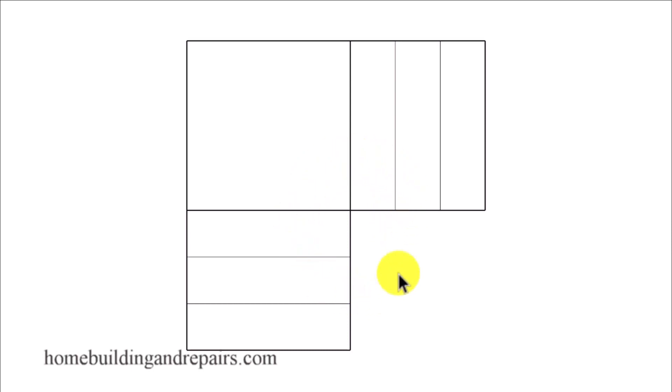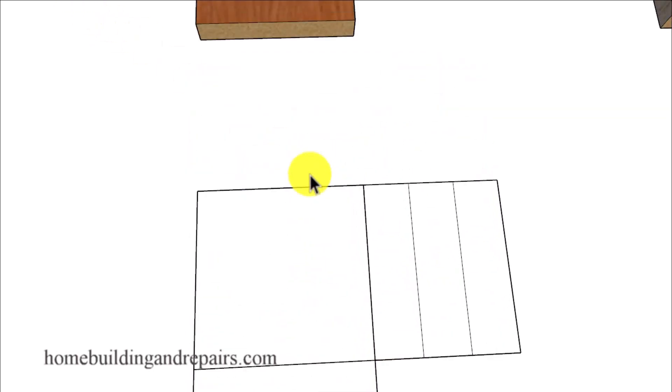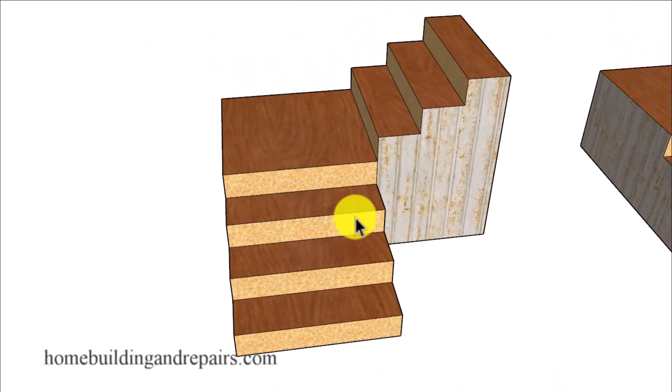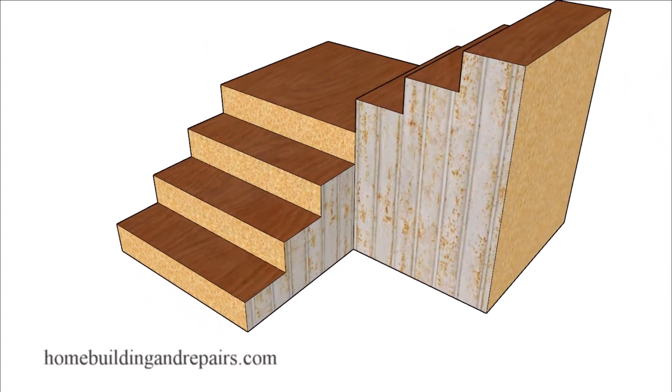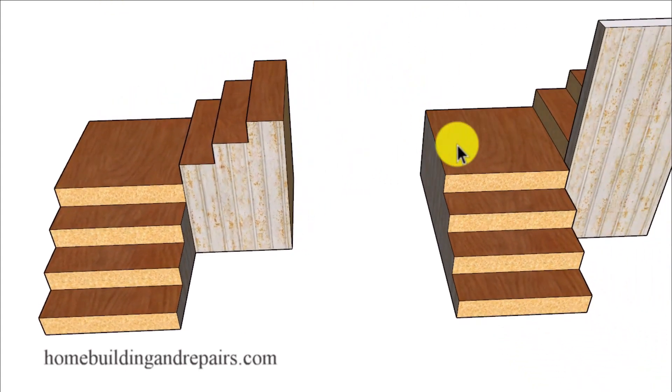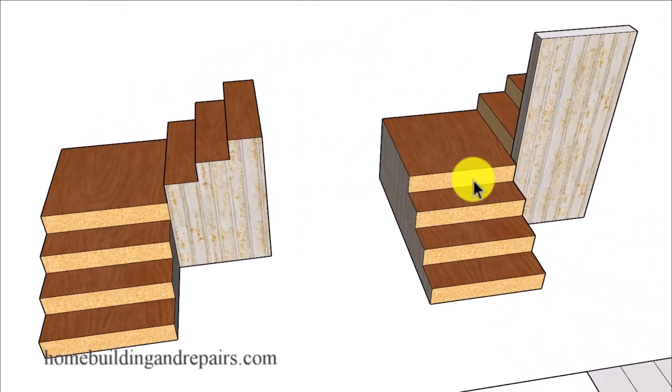You can see here where we're not going to have a problem with this type of design here, where the face of the riser lines up with the face of the finished wall. This would be more or less a standard stairway design along with the stairway with a wall. The face of the riser either lines up with the wall or is set back a little bit, or even lines up with the back surface of the finished wall.